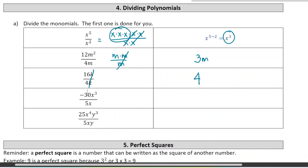Next: negative 30 divided by 5 is negative 6, and x-cubed divided by x — one x cancels, leaving x-squared, or subtract exponents: 3 minus 1 equals 2. The last one has multiple variables: 25 divided by 5 is 5; x to the power of 4 divided by x gives x-cubed (4 minus 1 equals 3); and for the y's, cancel one out, leaving y-squared.